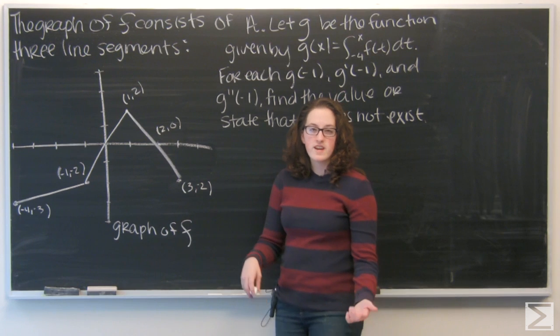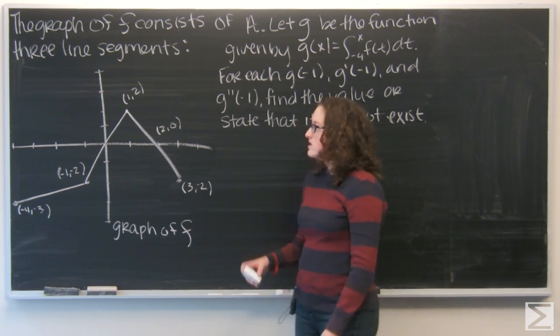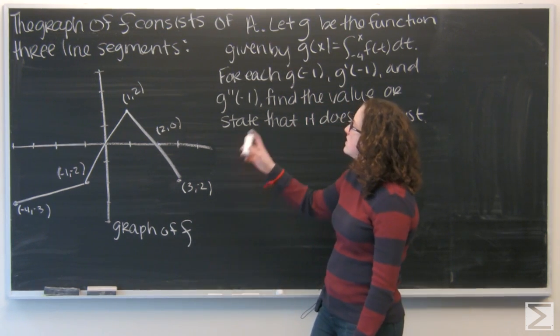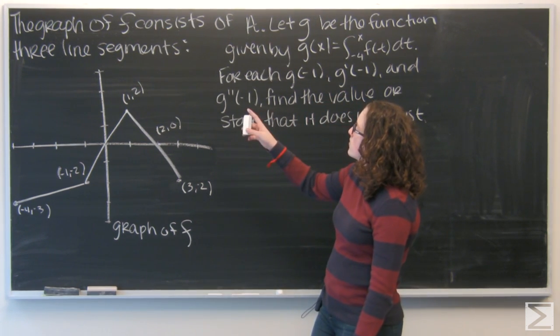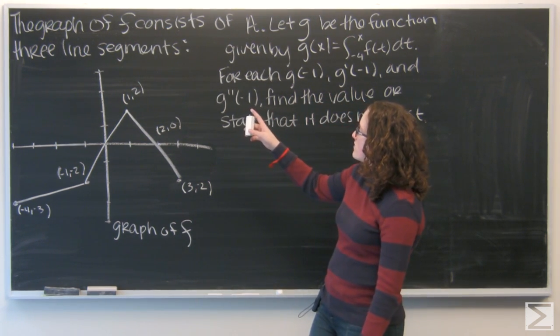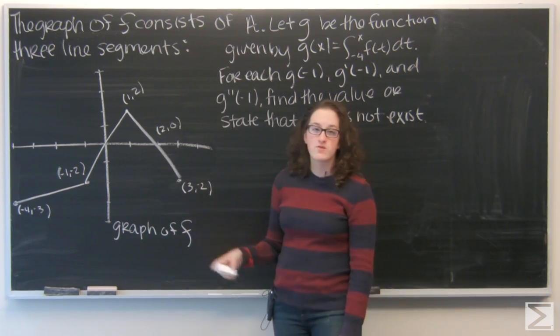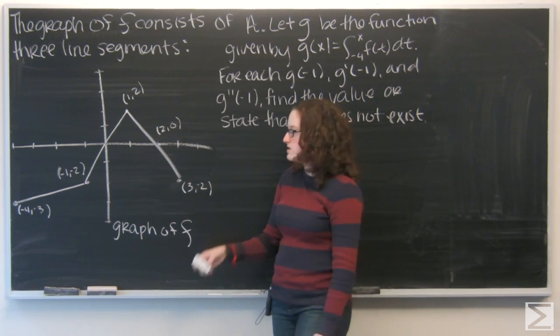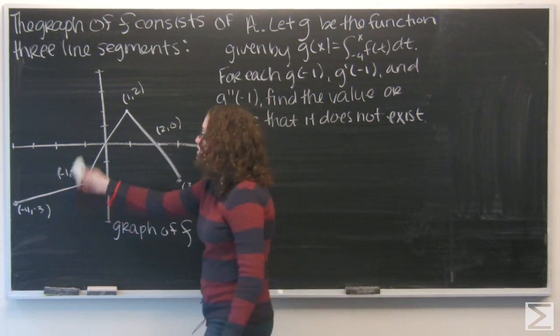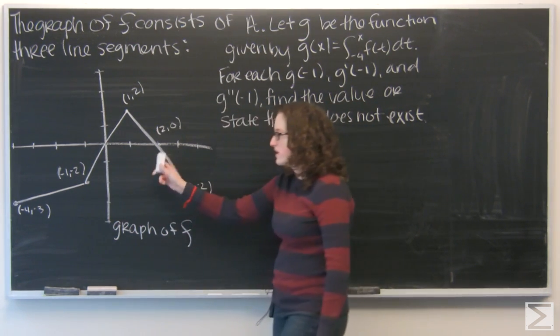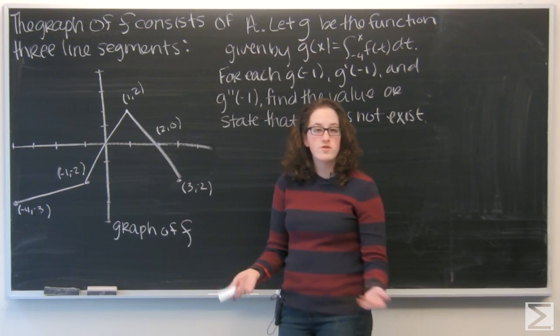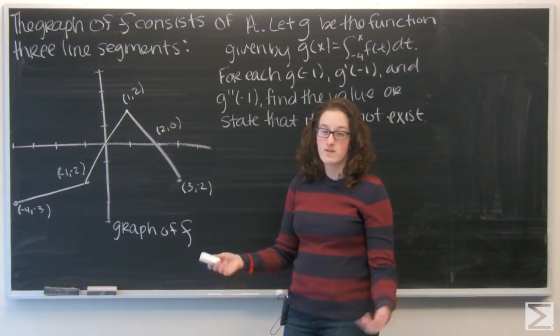So first let's take a look at what we're given. We're given a graph of a function f, and it consists of three line segments — one, two, three. So f is a piecewise function.